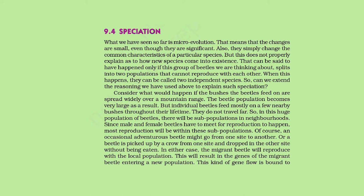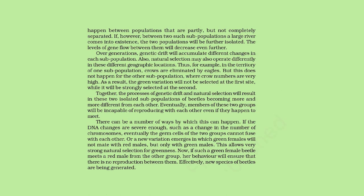Consider what would happen if the bushes the beetles feed on are widely spread over a mountain range. The beetle population becomes very large, but individual beetles feed mostly on a few nearby bushes and do not travel far. So in this huge population, there will be subpopulations in neighborhoods, and most reproduction will be within these subpopulations. An occasional beetle might travel from one side to another, or be carried by a crow and dropped elsewhere, reproducing with the local population. This results in gene flow between populations that are partly but not completely separated.